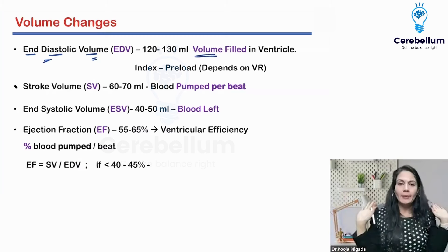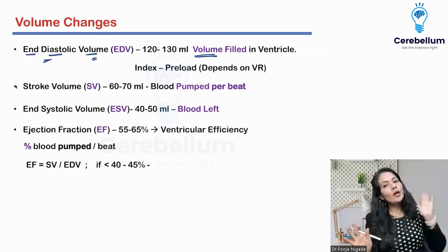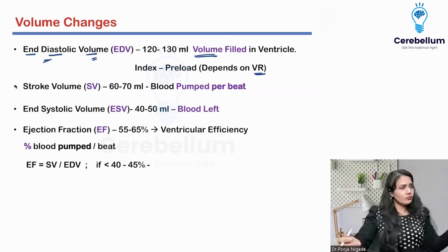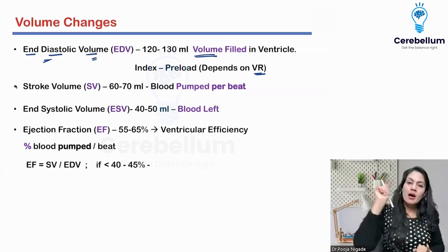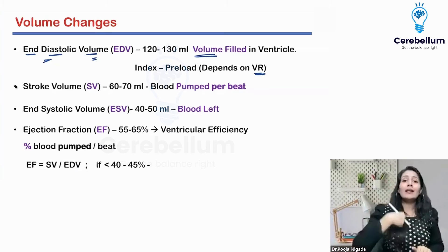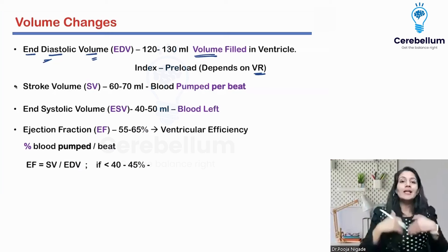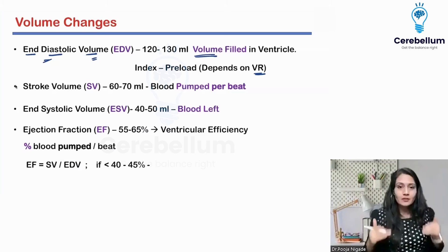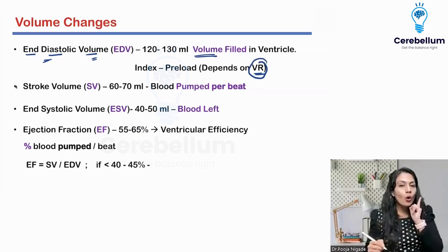The EDV is around 120 to 130 ml, and it is dependent on the preload, or venous return. Whatever the venous return is, that is what I get — just like how many marks you return to me in the exam is my achievement. If my students got all the questions correct, I'll be the happiest person. So venous return determines the EDV.